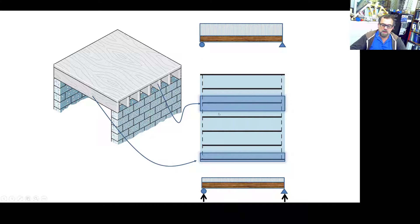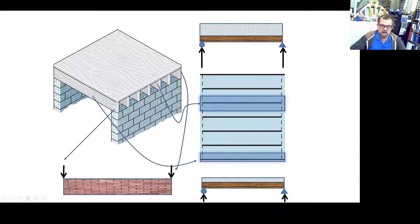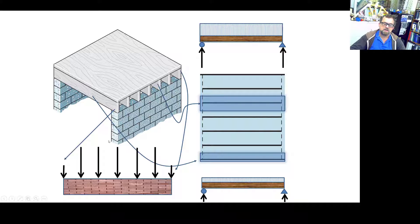The reactions for the interior girder are going to be bigger. At the wall ends, the reactions from the joists are applied to the wall. The five interior ones will have their type of reactions. You design with these loads — easy peasy.